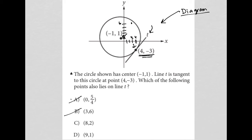Choice C, 8, 2. That's 4, 5, 6, 7, 8, and 2. Well, now, maybe — because that's at least in the right area. I could be off a little bit; I'm not using graph paper, I'm not using a ruler. So, yeah, maybe 8, 2 is on that line. It's very possible — close enough.